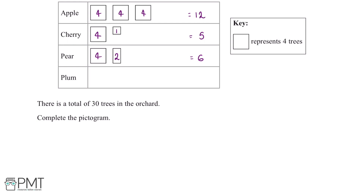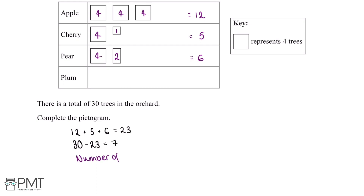Now we can add these three values together to work out how many apple, cherry and pear trees there are in total. Twelve plus five plus six is twenty-three. We've been told there are thirty trees in the orchard, and if there are twenty-three apple, cherry and pear trees, then the number of plum trees will be thirty minus twenty-three, which is seven.